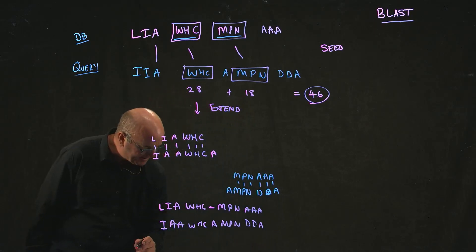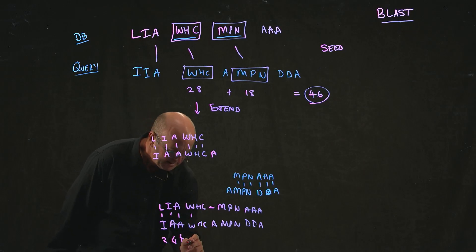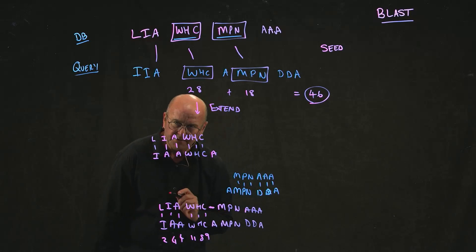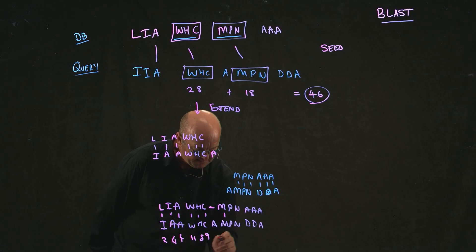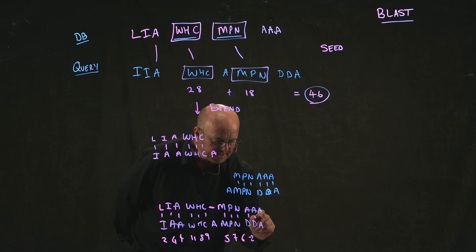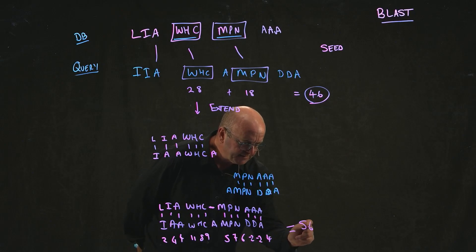Now we can actually score this whole thing. So if we go from an L to an I, we get a score of 2. If we go from I to an A, we get a score of minus 1. If we go from A to A, we get a score of 4. A W to a W is 11. A H to an H is 8. A C to a C is 9. I'm going to ignore the gap because we don't actually know how to score that for a second. An M to an M is 5. A P to a P is 7. An N to an N is 6. An A to a D is minus 2. An A to a D is minus 2. An A to an A is 4. And that gives me a sum total of 56.